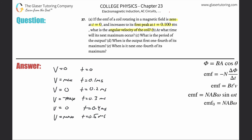We have a formula from another problem in the chapter: the angular velocity is equal to 2π divided by the period. We saw that the period was a function of angular velocity, and all we're doing is cross-multiplying to rearrange.